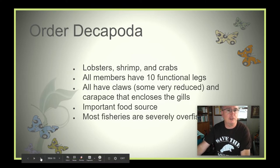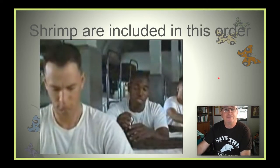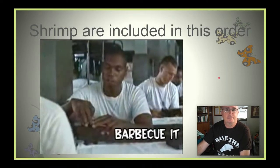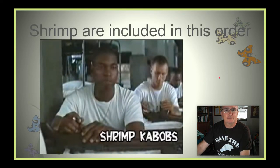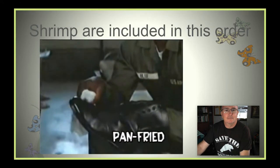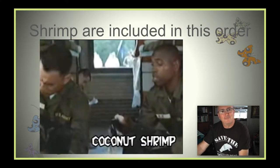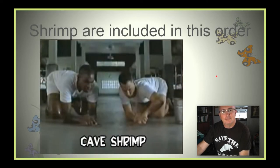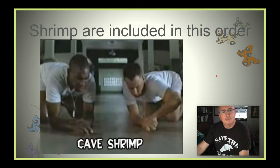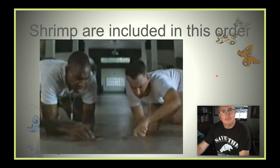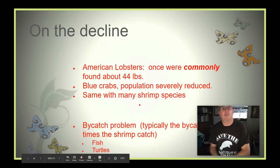A little bit about shrimp — shrimp is incredibly versatile. You can barbecue it, boil it, broil it, bake it, sauté it. There's shrimp kabobs, shrimp creole, gumbo, pan fried, deep fried, stir fried, pineapple shrimp, lemon shrimp, coconut shrimp, pepper shrimp, shrimp stew, shrimp salad, shrimp burger. That's about it — a lot of things you can do with shrimp.